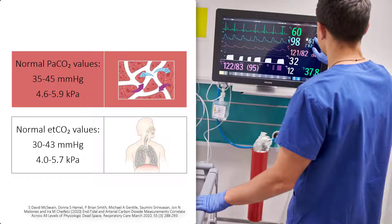Studies show overall a moderately strong correlation between end tidal CO2 and the arterial partial pressure of CO2, but dead space ventilation and shunt perfusion diminishes that association. With healthy lungs and normal airway conditions, end tidal CO2 provides a reasonable estimate of arterial CO2. With diseased or injured lungs, there is an increased difference between the partial pressure of arterial CO2 and end tidal CO2 due to a ventilation-perfusion mismatch.